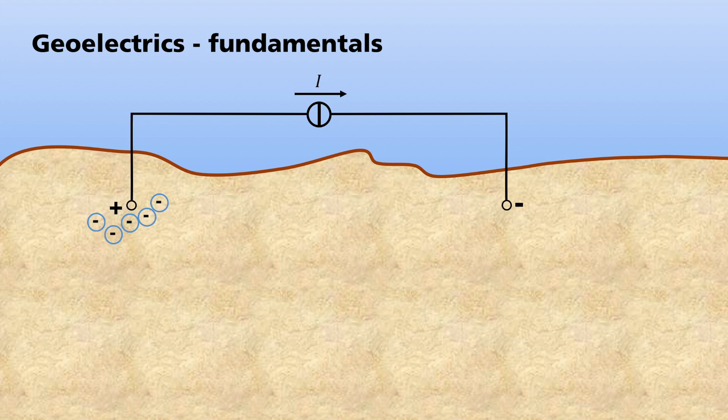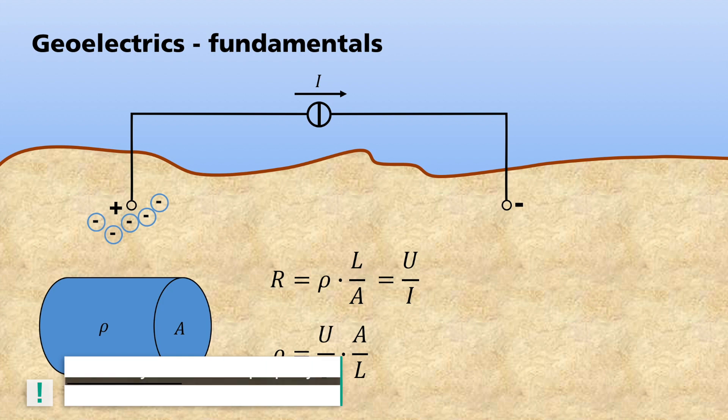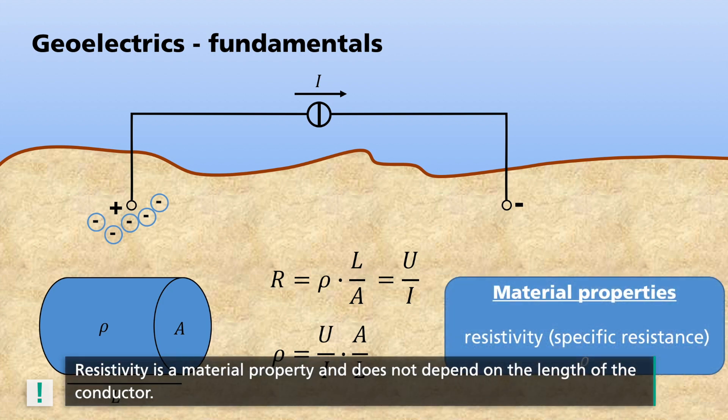I shall explain the physical parameters of this process using the example of a cylindrical test body. This might be, for example, a wire through which current flows. Here, I use the reciprocal of the conductance, namely the electrical resistance R. This depends on the length L of the body, its cross-sectional area A and the resistivity rho. R equals rho times L divided by A. With an applied voltage of U and a current of I, for rho this results in U divided by I times A divided by L. The resistivity rho or specific resistance is a material property and does not depend on the length of the conductor.